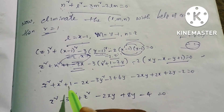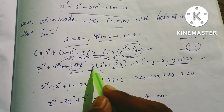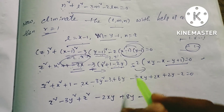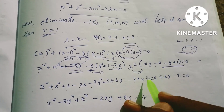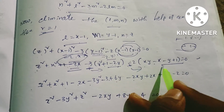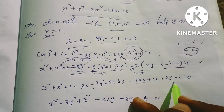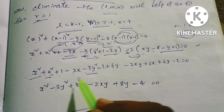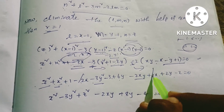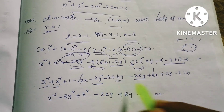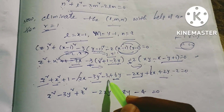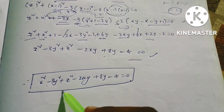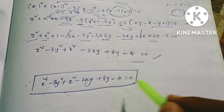Collecting like terms: z² + x² - 3y² - 2xy. The -2x and +2x cancel. Constants: 1 - 3 - 2 = -4. The y terms: 6y + 2y = 8y. Therefore the final equation of the cone is x² - 3y² + z² - 2xy + 8y - 4 = 0. This is our solution.